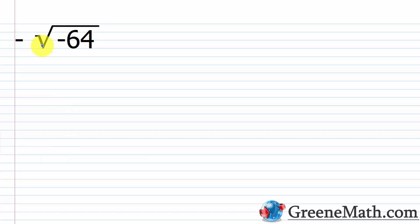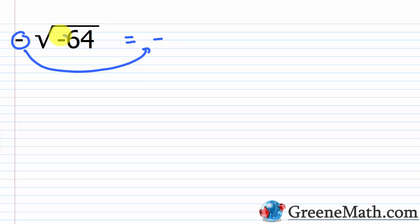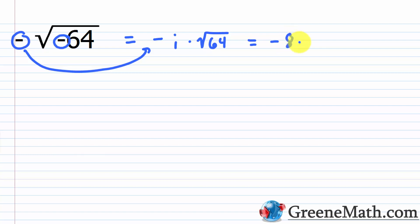Now let's look at the negative square root of negative 64. The negative out in front just carries over to the answer — we don't need to worry about it separately. The negative inside the square root represents the square root of negative 1, which we replace with i. Then we have i times the square root of 64. The square root of 64 is 8, so we get 8 times negative i, or negative 8i as the simplified answer.